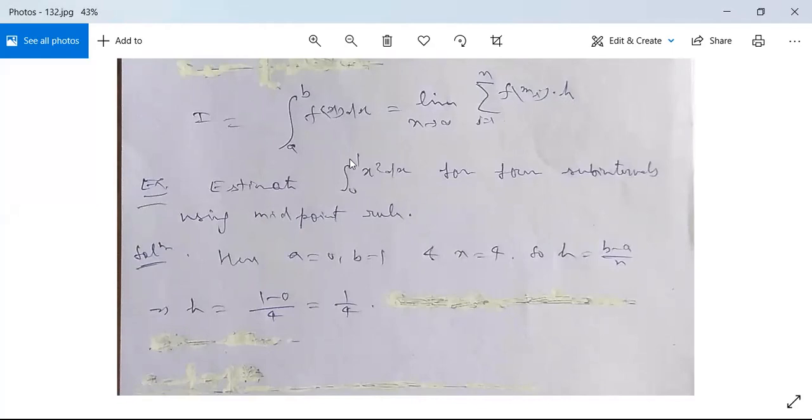Estimate integration from 0 to 1 of x² dx. Here f(x) is x² for four subintervals. It is given n equals 4 using midpoint rule. See the solution here: a equals 0 and b equals 1, and n equals 4 because we need to find its solution for four subintervals.